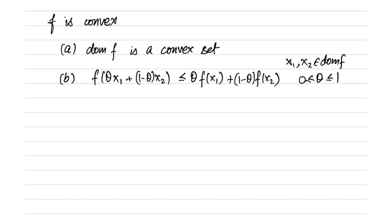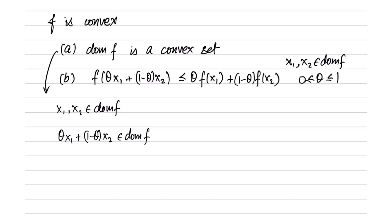These are the two conditions which must be satisfied for a function f to be convex. Note that the first condition is actually important because if there are two points x1, x2 that belong to the domain of f, then the domain of f must be a convex set to ensure that the point θx1 + (1−θ)x2 is also in the domain, so the function is defined there. Always check the first condition — that the domain of f is a convex set — before going to the second condition.